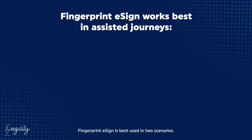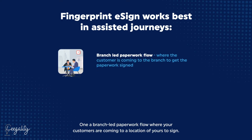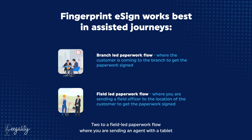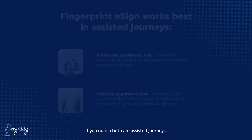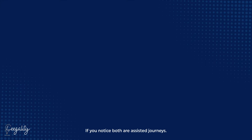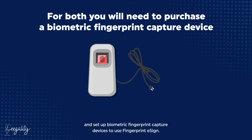Fingerprint eSign is best used in two scenarios: first, a branch-led paperwork flow where your customers are coming to a location of yours to sign; and second, a field-led paperwork flow where you are sending an agent with a tablet to get the document signed by the customer. Both are assisted journeys. In both scenarios, you will need to purchase and set up biometric fingerprint capture devices to use Fingerprint eSign.